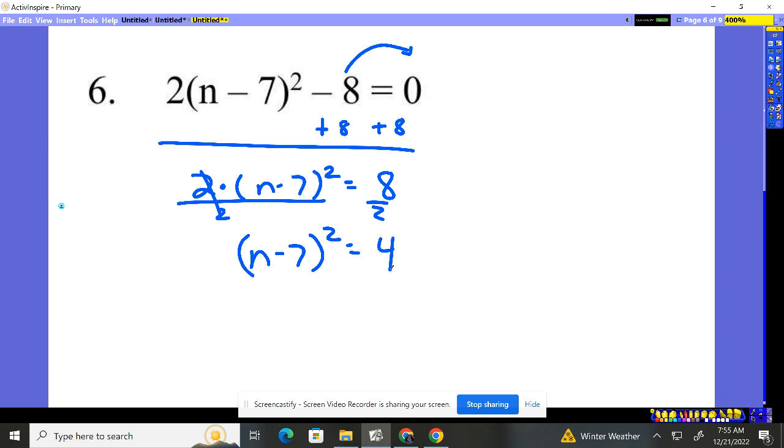I need to get rid of that square. What do we do? We take the square root. When I take the square root, it crosses out the squaring.